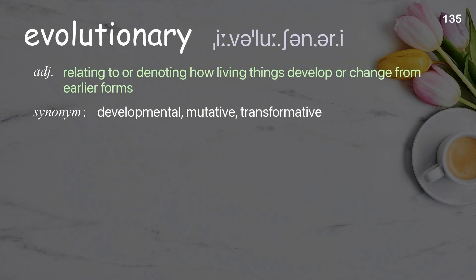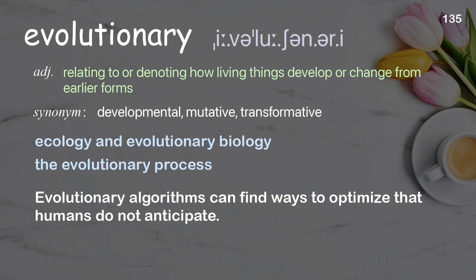Evolutionary: Relating to or denoting how living things develop or change from earlier forms. Examples: ecology and evolutionary biology, the evolutionary process. Evolutionary algorithms can find ways to optimize that humans do not anticipate.